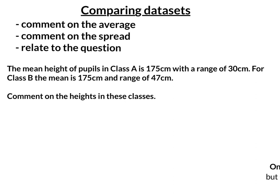Let's look at this second example. The mean height of pupils in class A is 175 centimetres with a range of 30 centimetres. For class B, the mean is 175 centimetres and the range is 47 centimetres. Comment on the height of these classes.